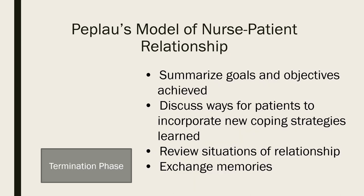The termination phase is the final integral phase of the nurse-patient relationship. Basic tasks of this phase include summarizing goals and objectives that have been achieved, discussing ways for patients to incorporate new coping strategies learned, reviewing situations of the relationship, and exchanging some memories. The termination phase often awakens very strong feelings in both the nurse and the patient. This phase signifies a loss for both, although the intensity and meaning could be very different for both. Being aware of how the patient is taking the loss of the relationship can be very vital for that nurse.